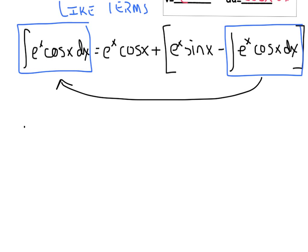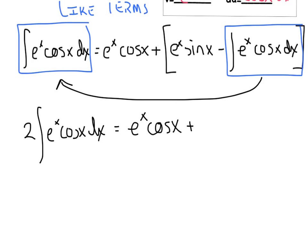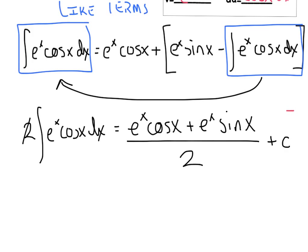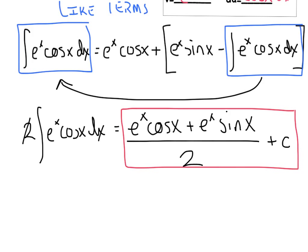Adding that over to here gives a grand total of 2 times the integral of e to the x cosine of x dx equals e to the x cosine of x plus e to the x sine of x. Then I'm going to divide the 2 to the other side, throw a plus c on the end, and that expression is the antiderivative of e to the x cosine of x. We had to do two iterations, then recognize the pattern and add the like terms together.